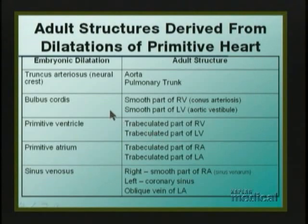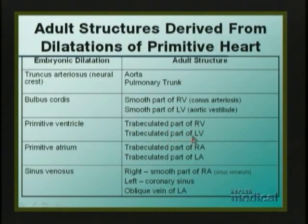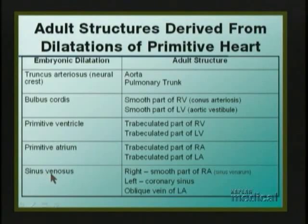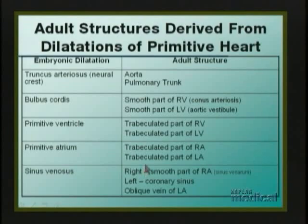Looking at the chart, the primitive ventricle gives rise to the trabeculated or roughened parts of the right and left ventricles. Similarly, the primitive atrium gives rise to the trabeculated parts of the right and left atria. The smooth-walled part of the right atrium was the original sinus venosus that got incorporated. And the smooth part of the ventricles was the original bulbus cordis, which is the proximal part of the truncus arteriosus that got incorporated. So the smooth-walled parts of ventricles and atria were originally vessels near the original heart.